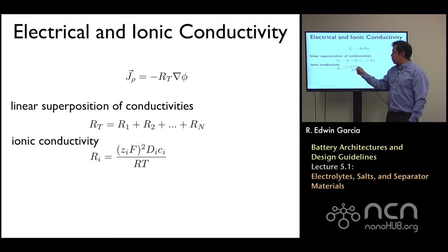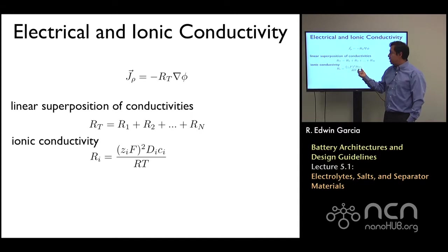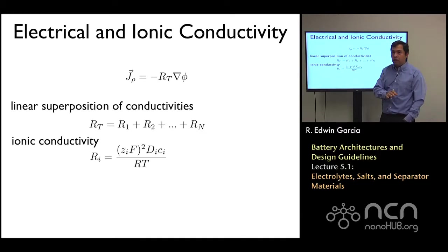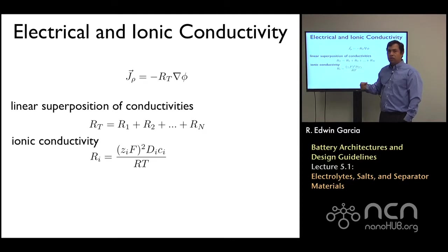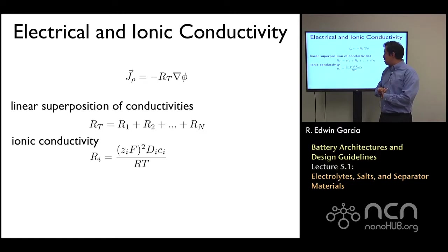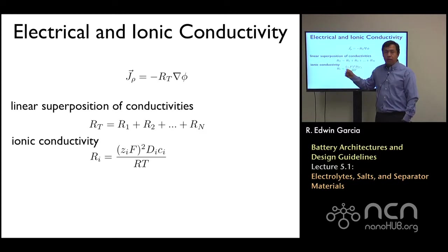This function, D sub i, is really also a function of composition. So you should expect this number to change if you have a certain amount of lithium with respect to not having any. It's really just a curve that you want to account for. You can see how the conductivity will drop at higher temperatures of the system, really suggesting that there are more ohmic losses, more scattering of the ions as the system proceeds. And obviously, the valence of the ion really plays an important role in specifying the conductivity of the cell.